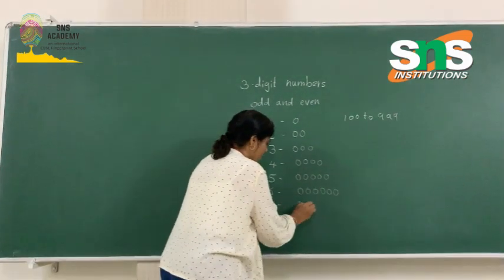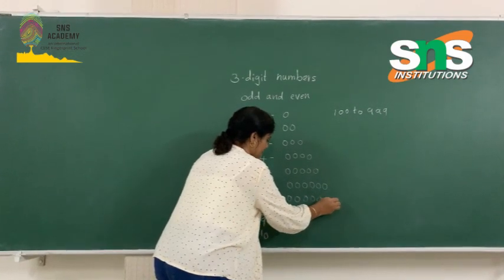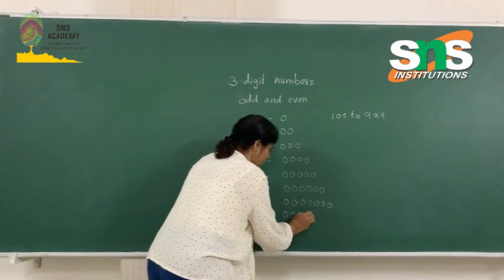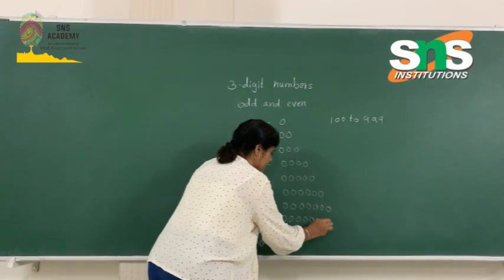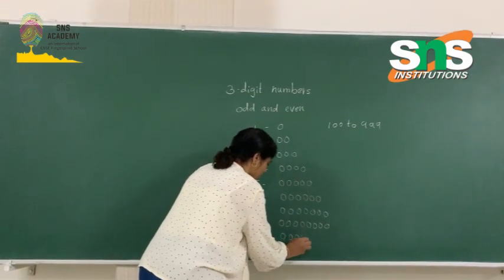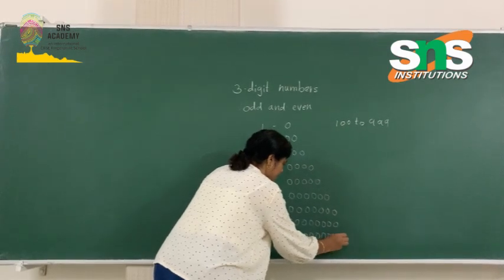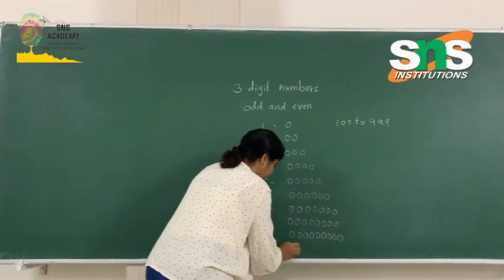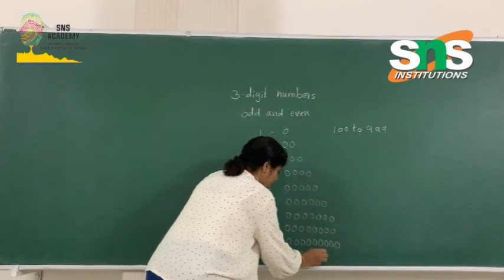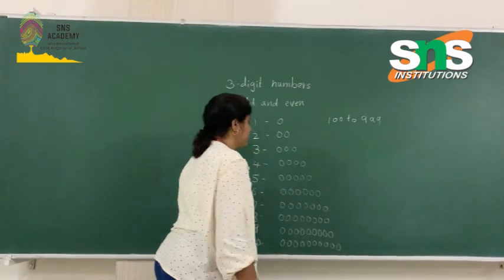Continuing the drawing: for 7, I draw 7 circles. For 8, I draw 8 circles. For 9, I draw 9 circles. For 10, I draw 10 circles. So, we have drawn the beads for each number from 1 to 10.